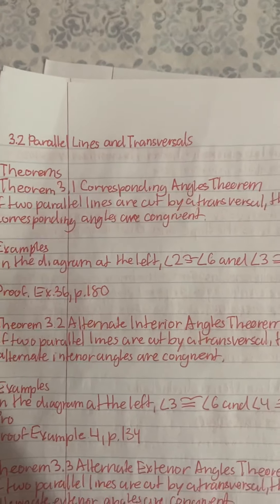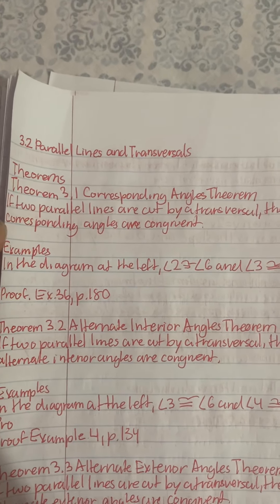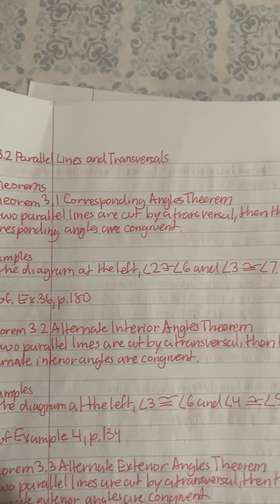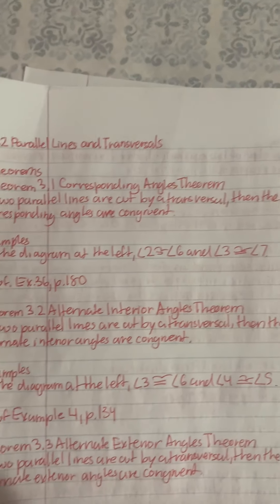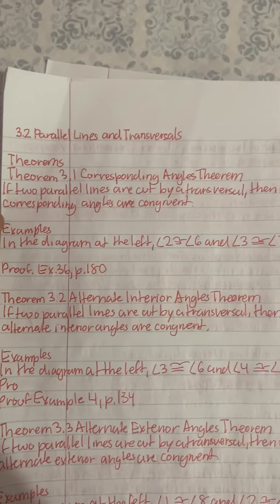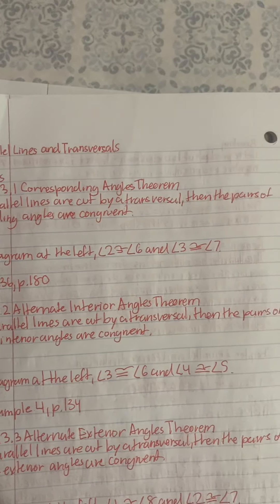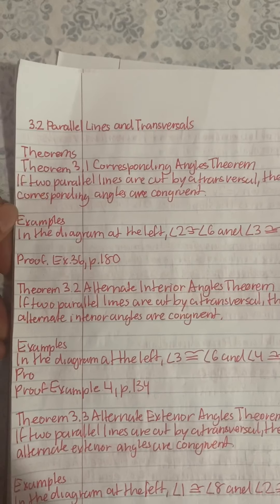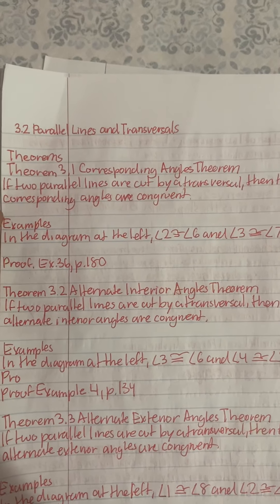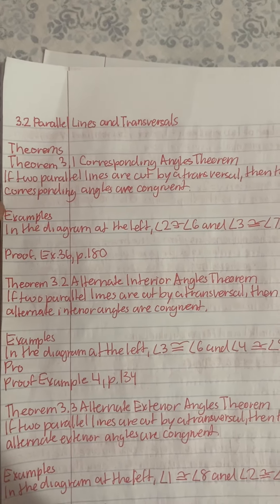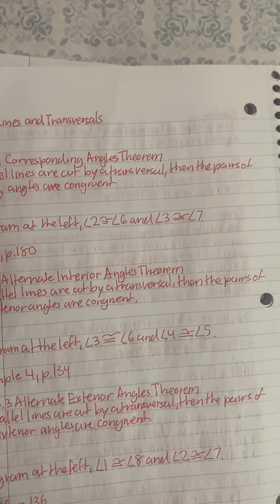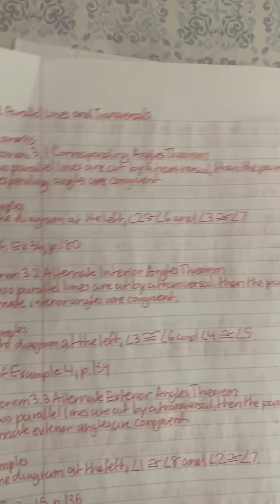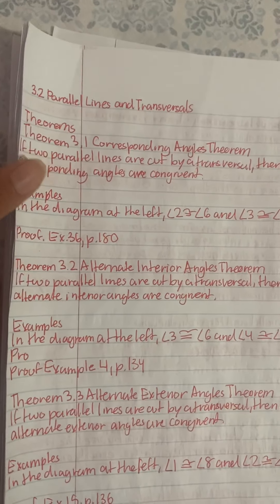3.2 Parallel Lines and Transversals. Theorems. Theorem 3.1, Corresponding Angles Theorem: If two parallel lines are cut by a transversal, then the pairs of corresponding angles are congruent. Example: In the diagram at the left, angle 2 is equal to angle 6, and angle 3 is equal to angle 7.